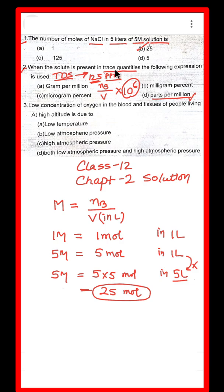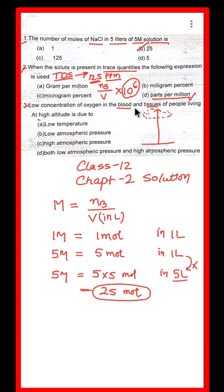Question 3: Low concentration of oxygen in blood and tissues of people living at high altitude — why does this happen? When we go to high altitude, the oxygen concentration is low. This is due to the low atmospheric pressure there. So the second option — low atmospheric pressure — is the correct answer.